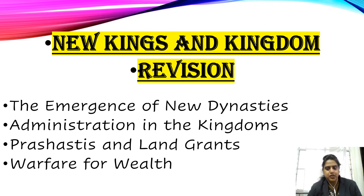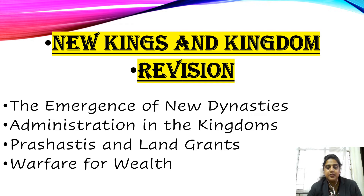In the mid-8th century, there was a king named Dantidurga from the Rashtrakuta dynasty. He overthrew the rule of the Chalukya king by performing a ritual named Hiranyagarbha, meaning 'the golden womb.' By performing this sacrifice, it meant that he himself became a Kshatriya — even if he was not a Kshatriya by birth, performing this ritual made him one. This is how new dynasties emerged.